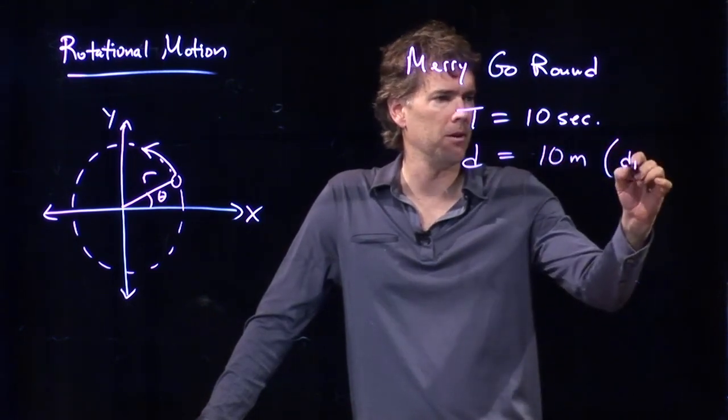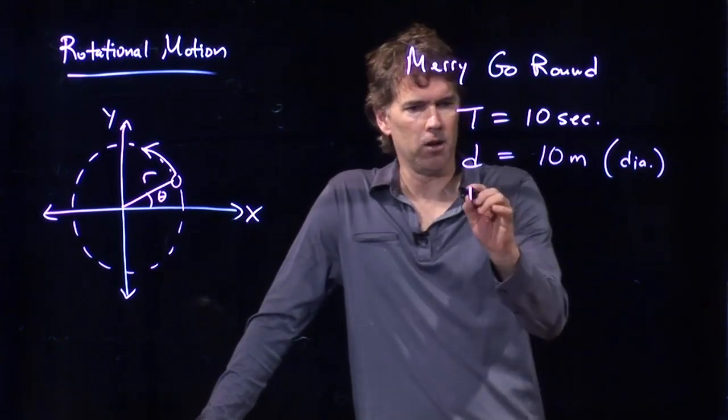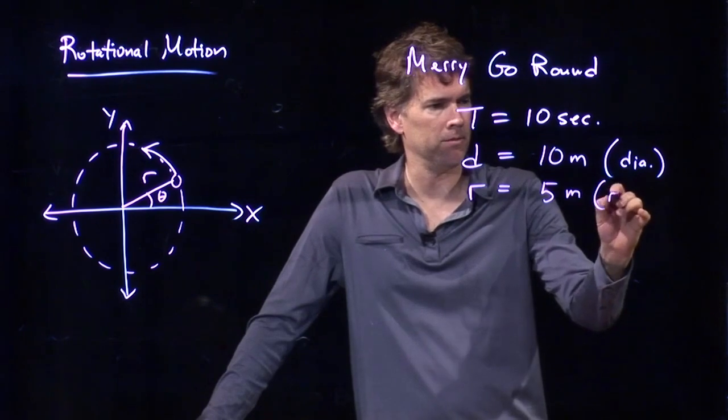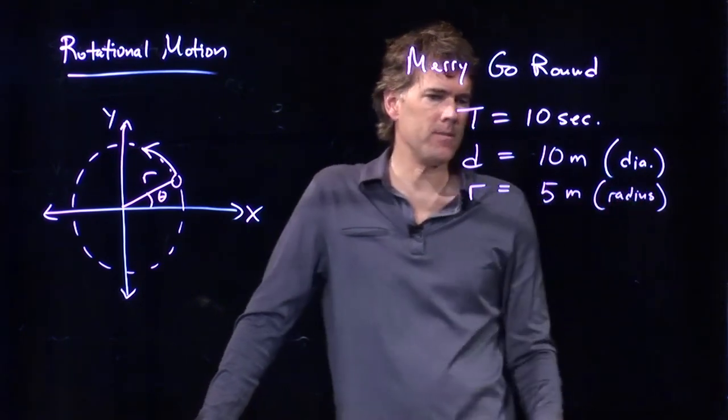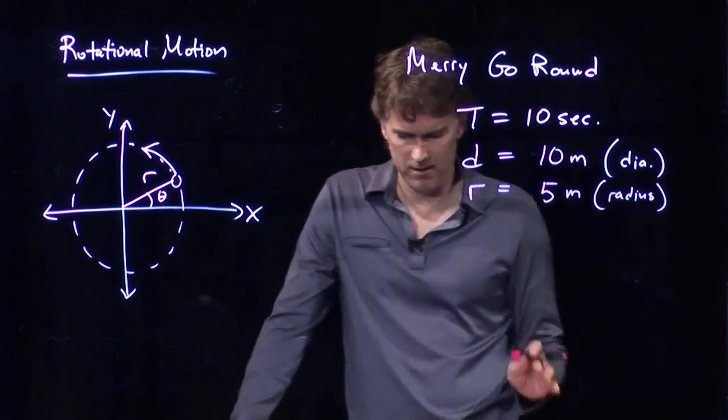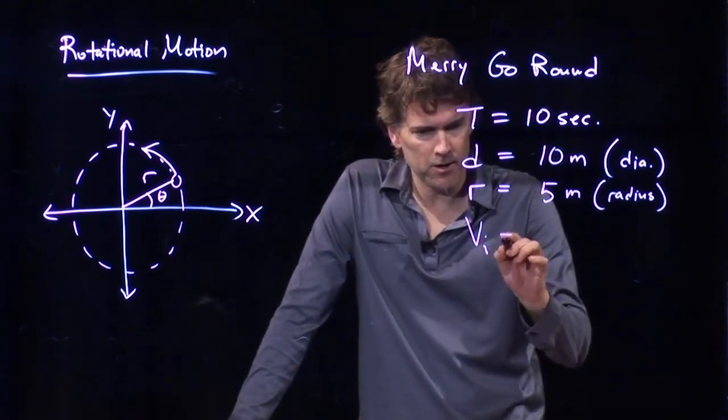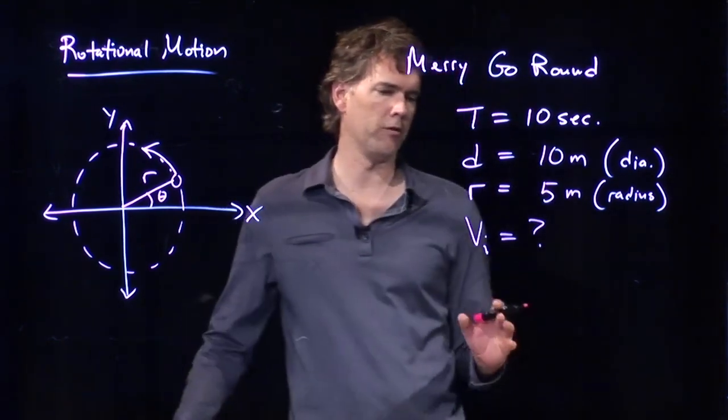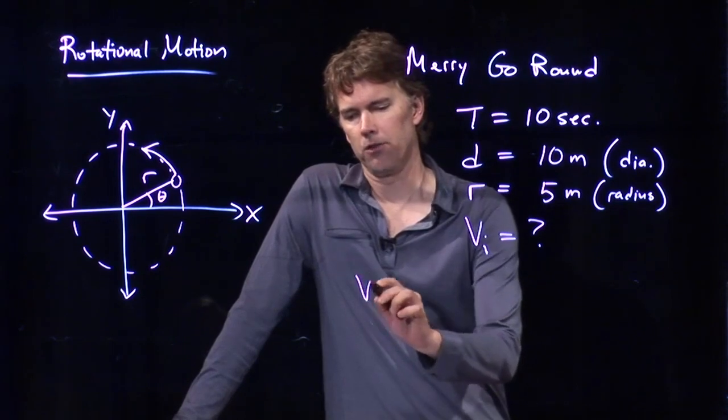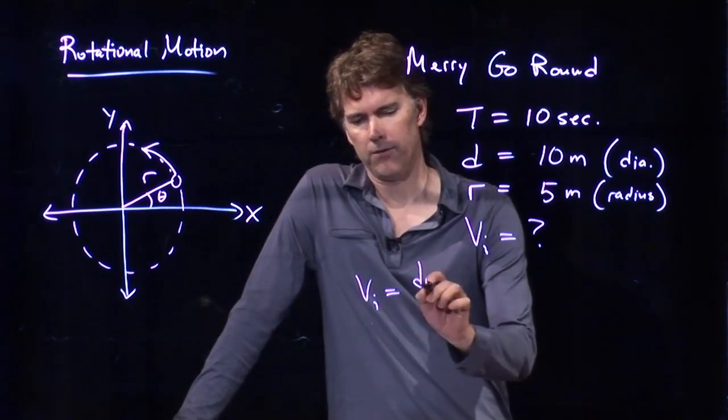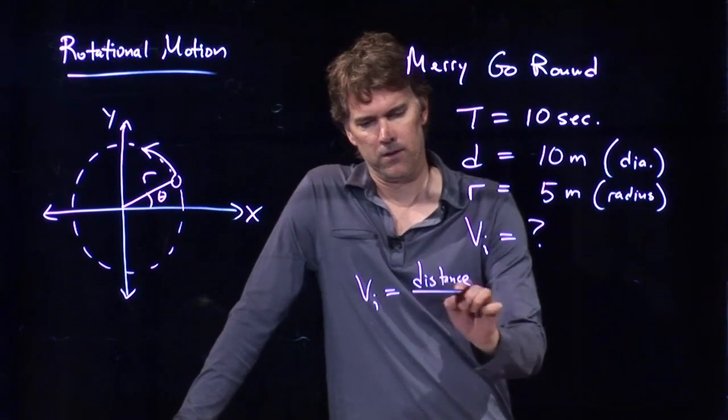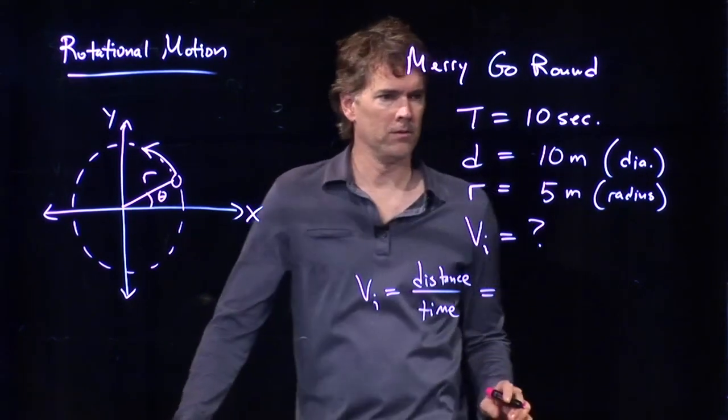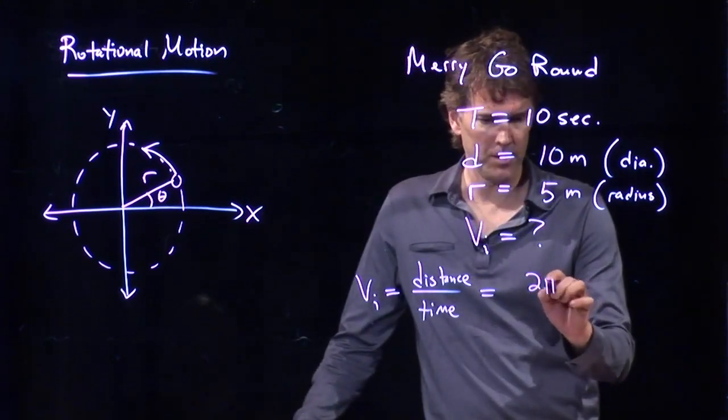It would probably have a diameter of maybe 10 meters. Okay, this is the diameter. If that's the diameter, then r is, of course, 5 meters. That's the radius. And now let's calculate the following. Let's figure out what our initial speed is. Okay, well, we just showed you the formula for that. That's not too bad. The initial speed is just how far you go and how long it takes.